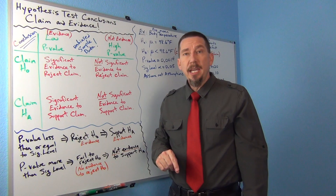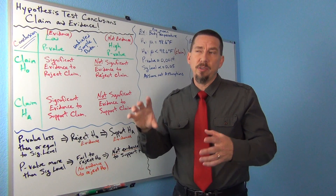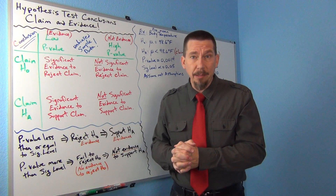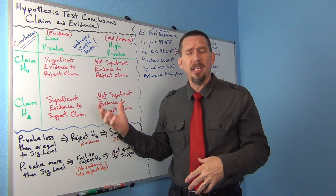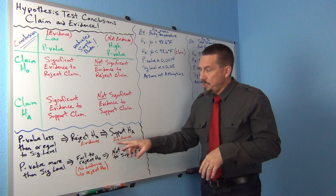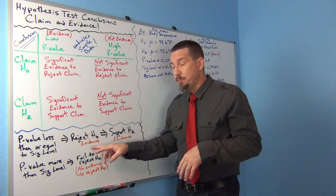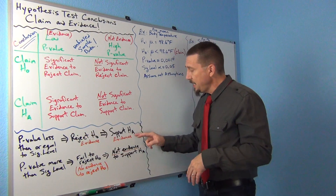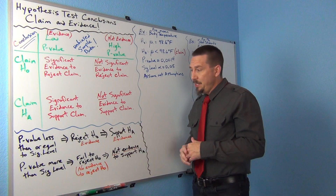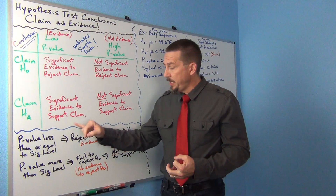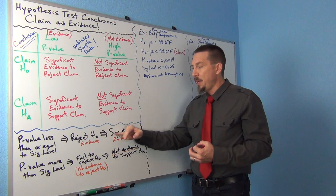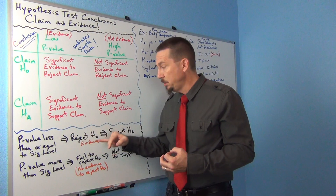If the null hypothesis was the claim, we would say we're rejecting the claim. But what if the claim was actually HA — the alternative? Well, since we're saying we have evidence that the null is probably wrong, that gives us evidence that HA might be correct, or that we're supporting HA. So a low p-value tells you that you're rejecting the null hypothesis and supporting the alternative — the alternative might be correct and we think the null is probably wrong.